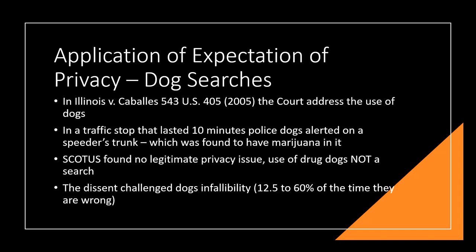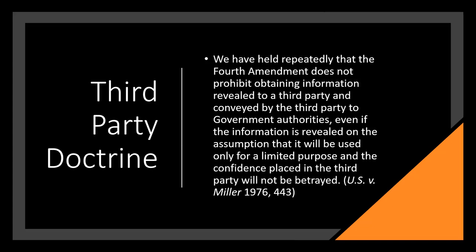The Supreme Court in Miller stated: 'We have repeatedly held that the Fourth Amendment does not prohibit obtaining information revealed to a third party and conveyed by that third party to government authorities, even if the information is revealed on the assumption it'll be used only for limited purposes and confidence is placed that the third party will not be betrayed.' This means police are free to utilize informants — people already working for the police — or parties later turned by the police.